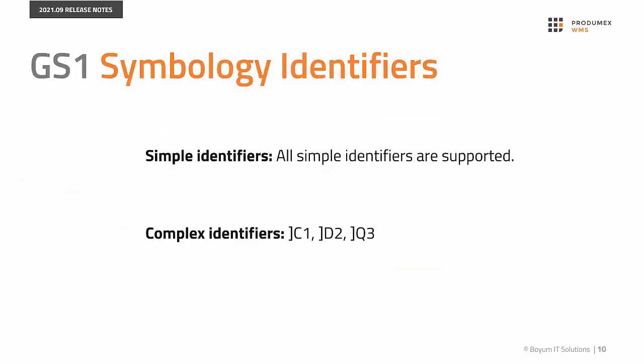GS1 Symbology Identifiers: The Symbology Identifier is not encoded in the barcode — it's generated by the decoder, and all scanning equipment has the ability to recognize the symbology that has been scanned. The Symbology Identifier is a three-character data string consisting of a flag character, code character, and a modifier character. From product version 20.21.9, PradoMax WMS supports all the simple identifiers and the listed complex identifiers.